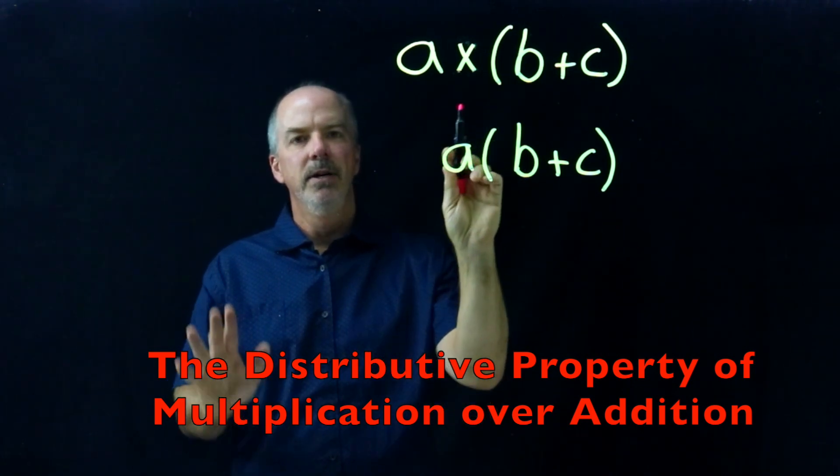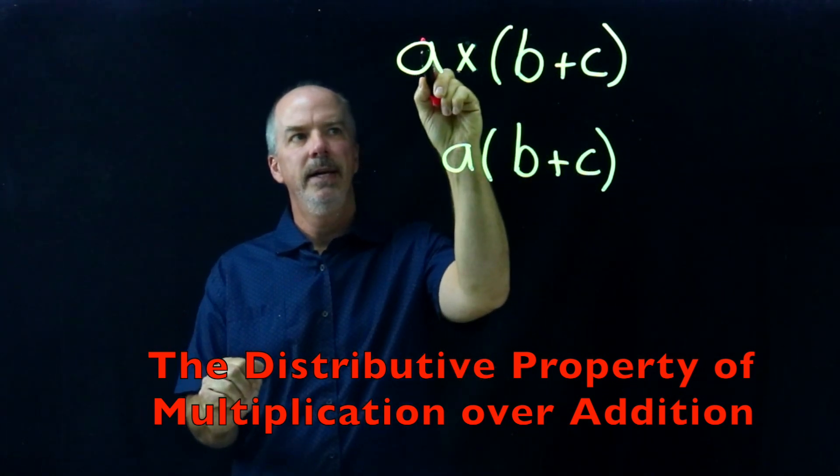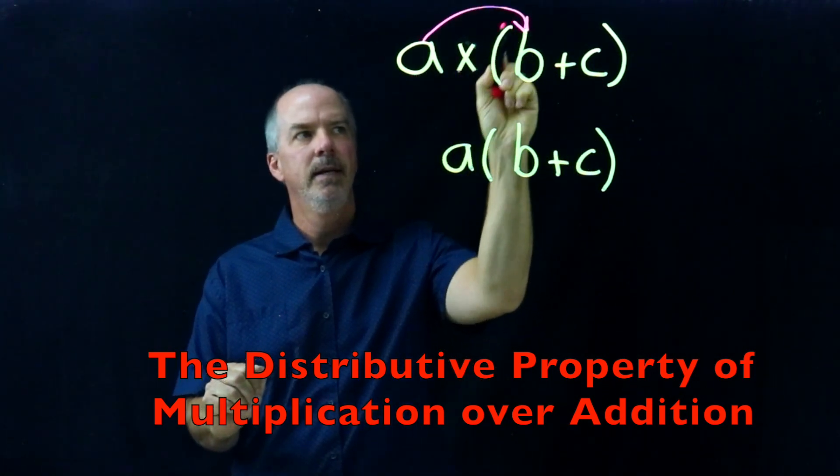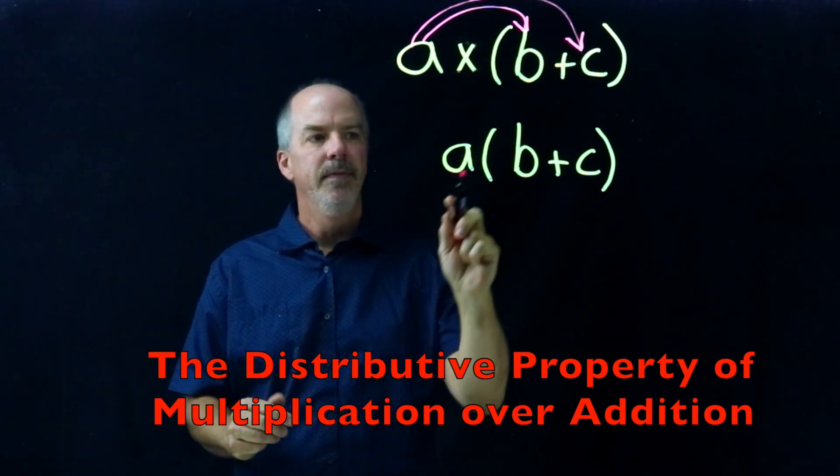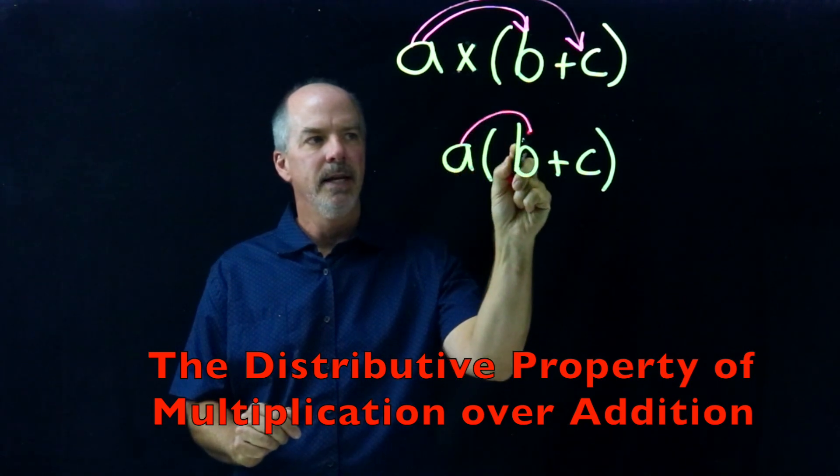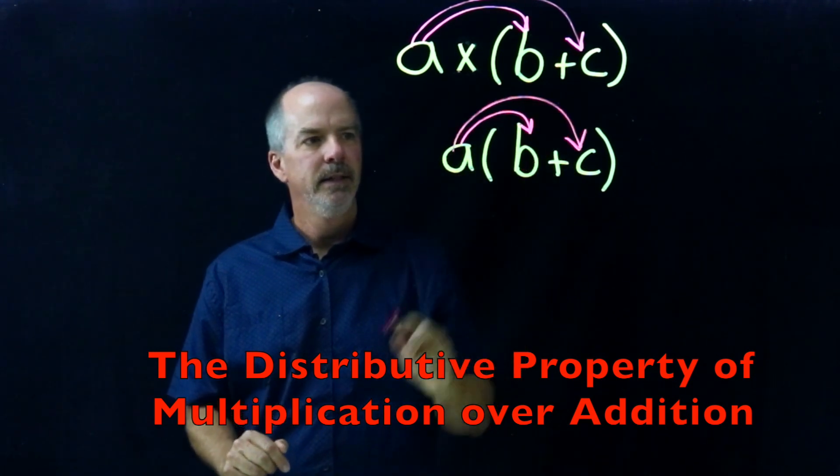Let me show you what that means. If we're distributing this factor into the parentheses, we're going to multiply the a times the b, and we're going to multiply the a times the c. If there's no sign, you would do the same thing. It means to multiply a times b and a times c.